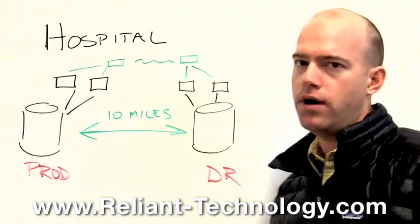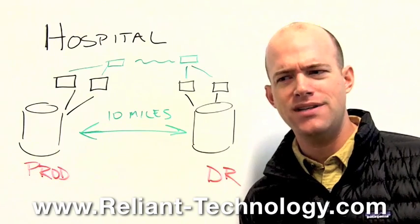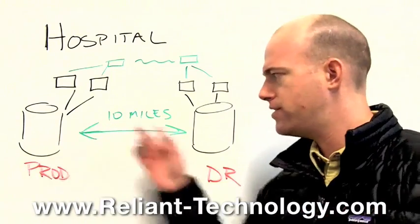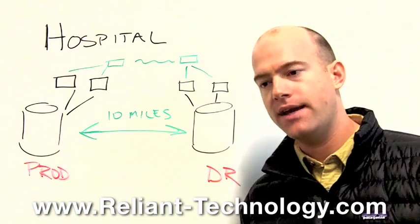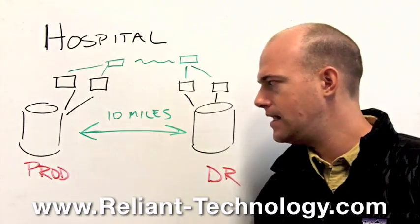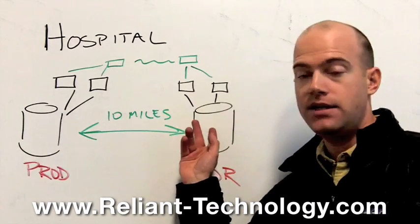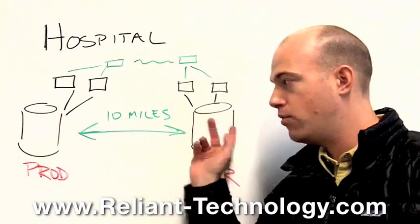Tip number one: compare new and used technology when building out a new SAN. When they scoped it out, they engaged EMC and realized they needed about 40 terabytes of disk at production and 40 terabytes at DR to mirror that data from point A to point B. They got their quote back from EMC and they just couldn't afford it.